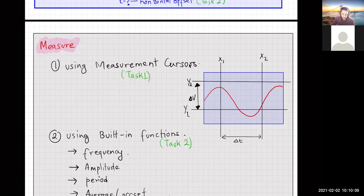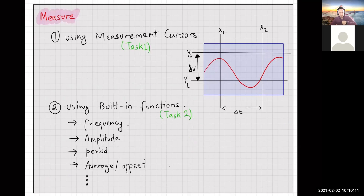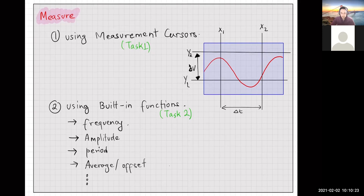After you've acquired and displayed the signals, you'll want to make measurements such as amplitude, frequency, and period. There are two ways to make measurements on any oscilloscope. The first is using measurement cursors — there are two kinds: X cursors and Y cursors.